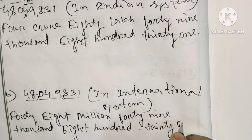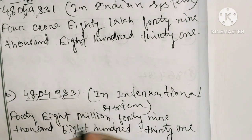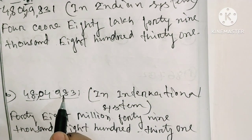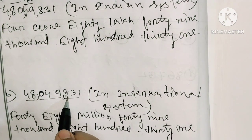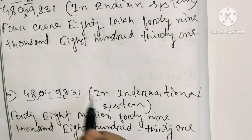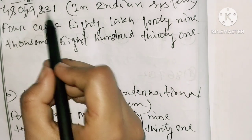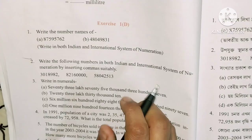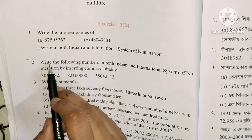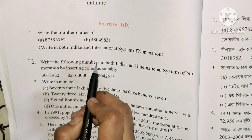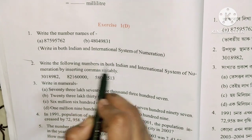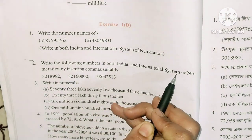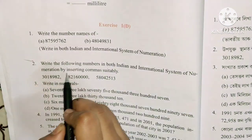The number is 0 in the international system. The Indian number is 1, or 1, or 1. The following numbers in both Indian and international systems of numeration by inserting commas.